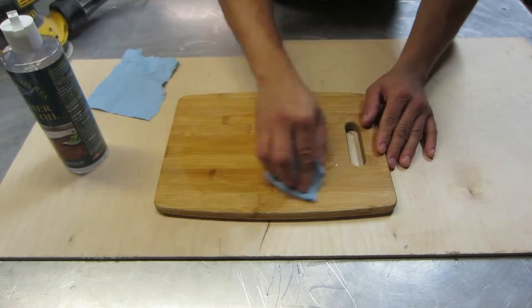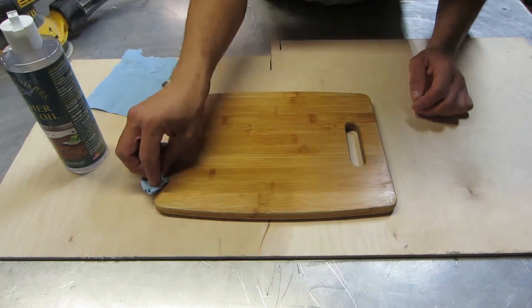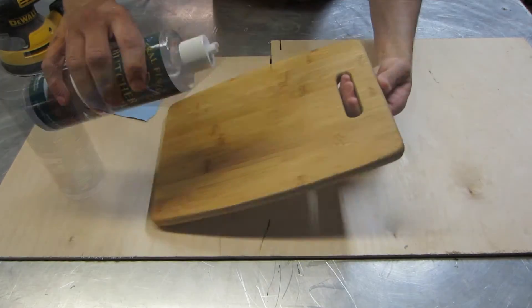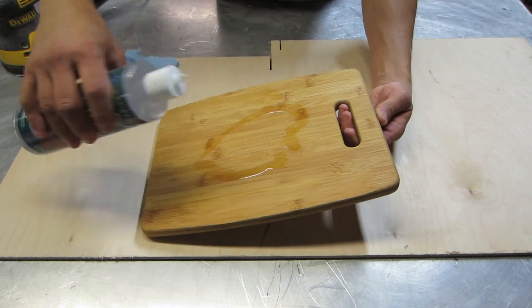On this bamboo cutting board I found it only needed about two coats. On my maple cutting boards I noticed it needed a few more just because the maple was absorbing so much of the oil.